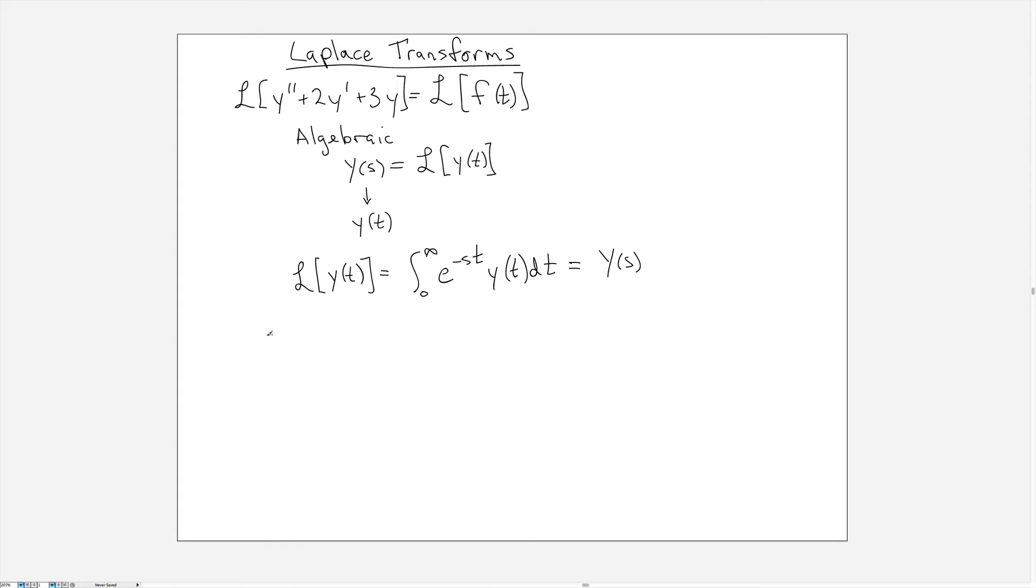Let's say we start with the example Y of T is equal to some constant function C. So then the Laplace transform of the constant function C is going to be given by the integral from 0 to infinity e to the minus S T multiplied by constant dt.